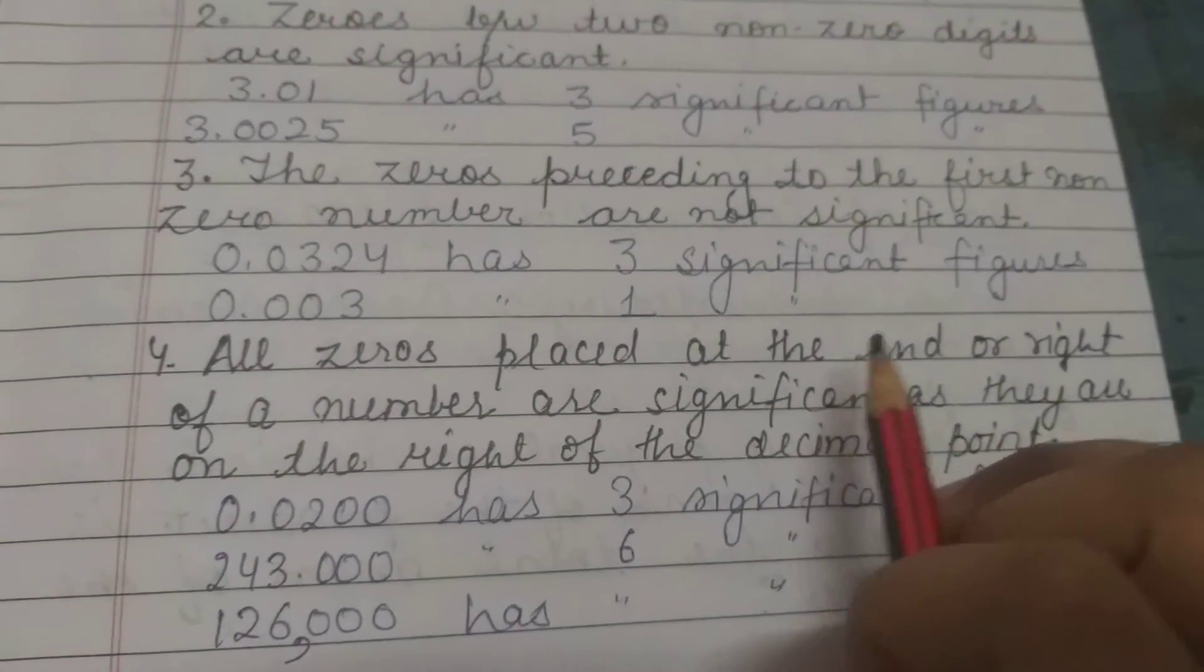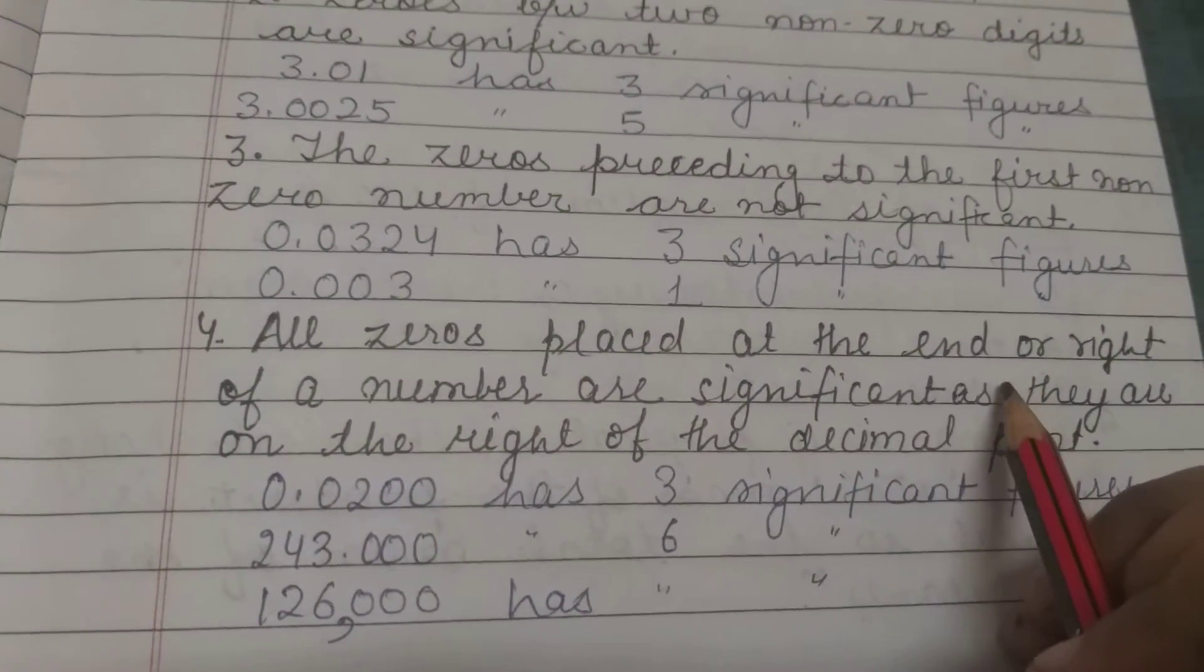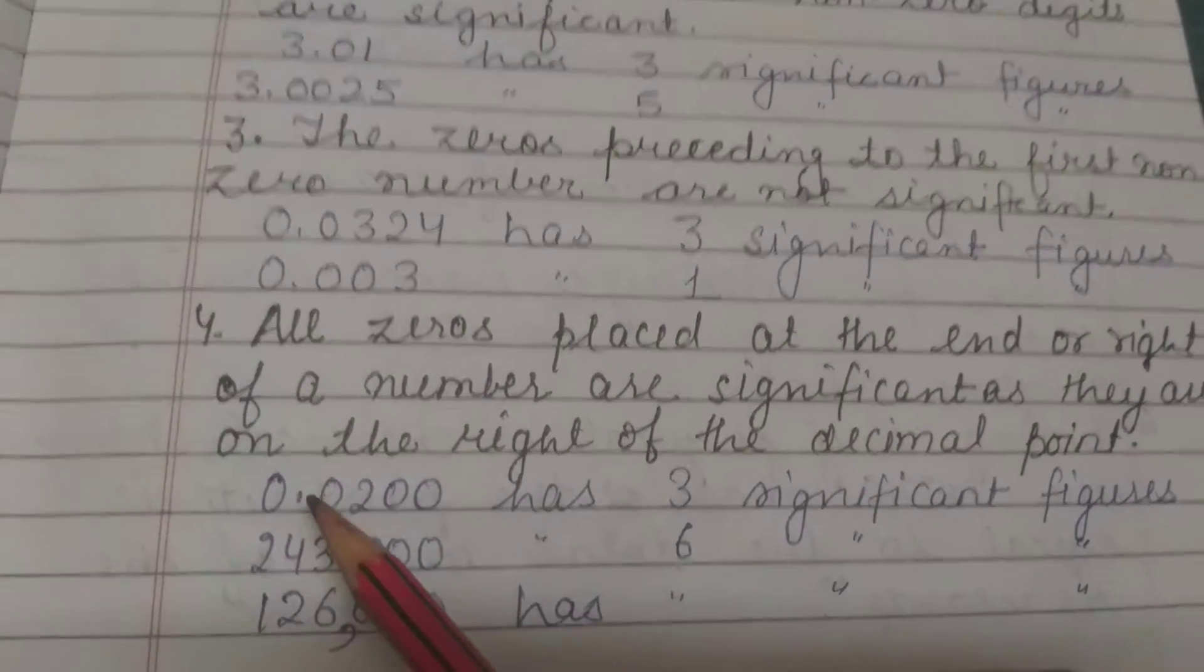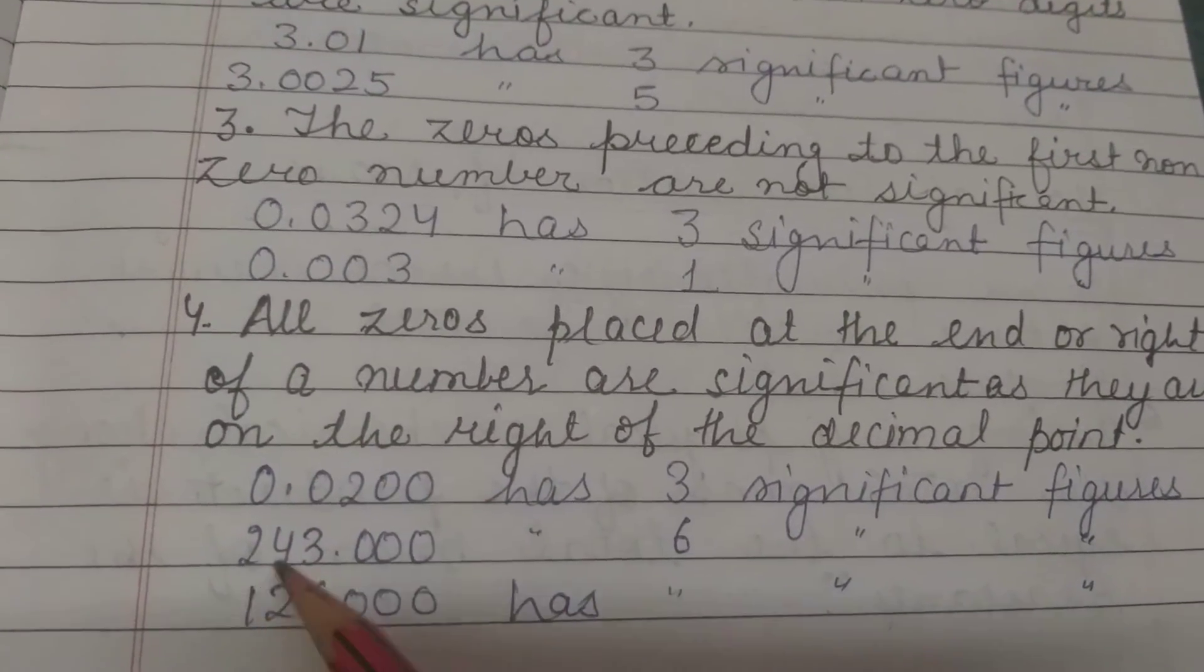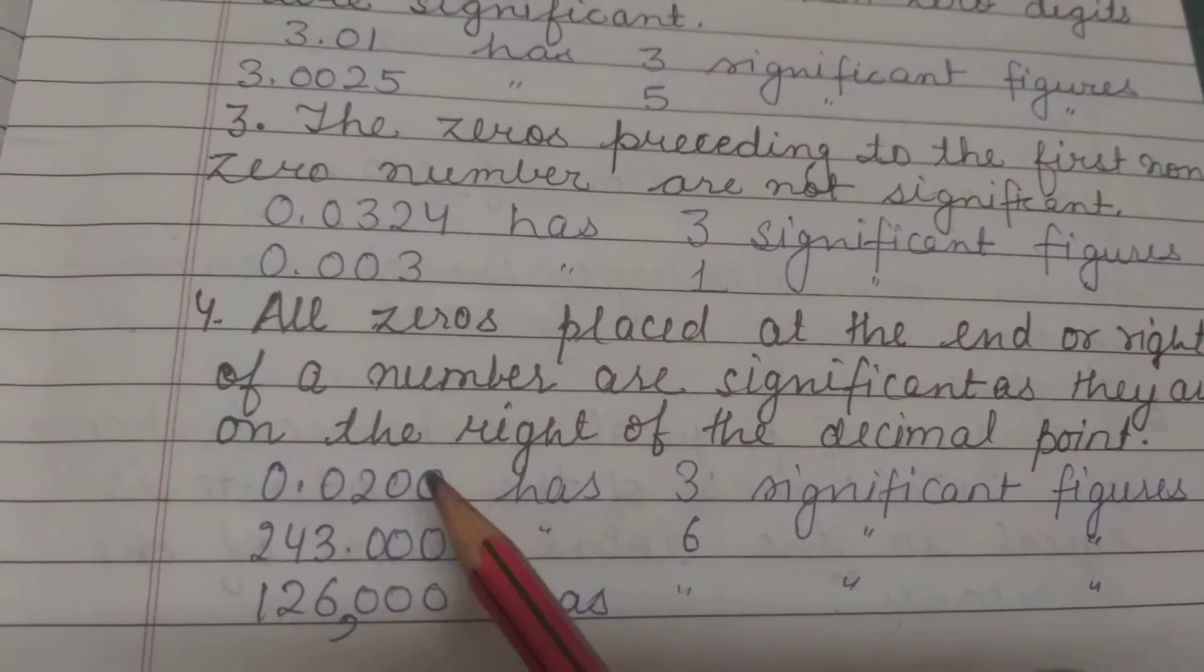Last rule: all zeros placed at the end or right of a number are significant as long as they are on the right of the decimal point.